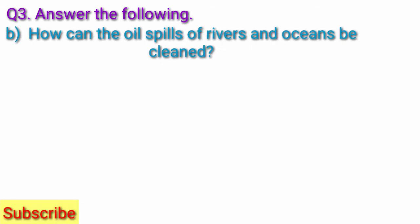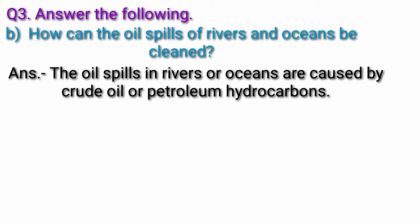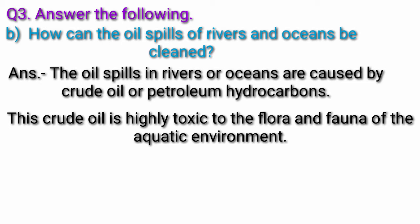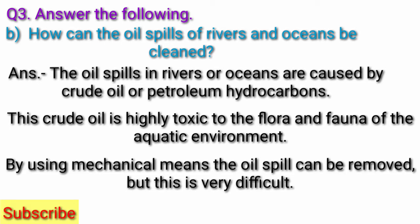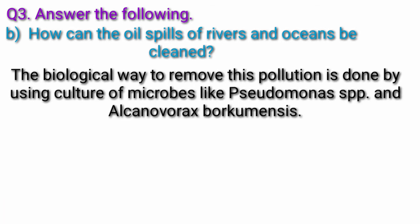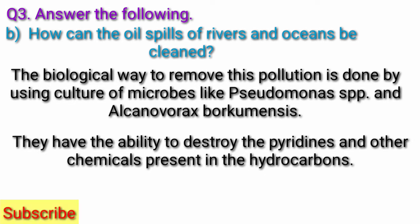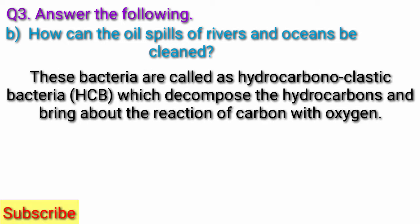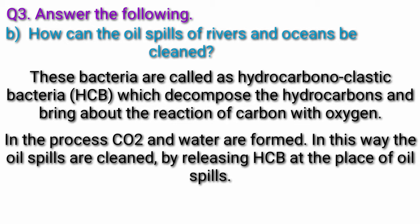How can the oil spills of rivers and oceans be cleaned? The oil spills in rivers or oceans are caused by crude oil or petroleum hydrocarbons, which are highly toxic to the flora and fauna of the aquatic environment. By using mechanical means the oil spills can be removed but this is very difficult. The biological way is done by using cultures of microbes like Pseudomonas sp. and Alcanivorax borcumensis. They have the ability to destroy the pyridines and other chemicals present in the hydrocarbons. These bacteria are called hydrocarbonoclastic bacteria, which decompose the hydrocarbons and bring about the reaction of carbon with oxygen, forming CO2 and water. The oil spills are cleaned by releasing HCB at the place of oil spills.